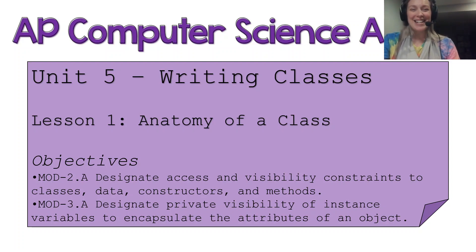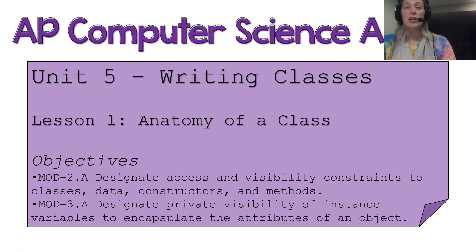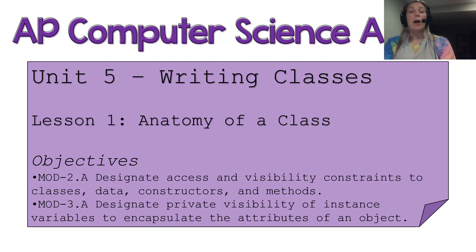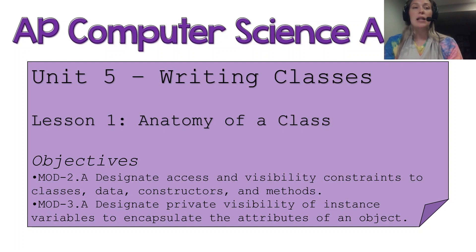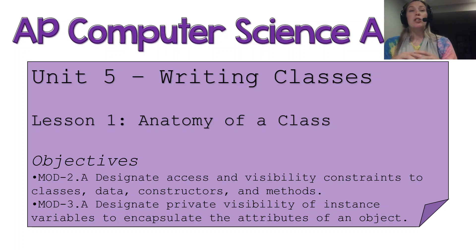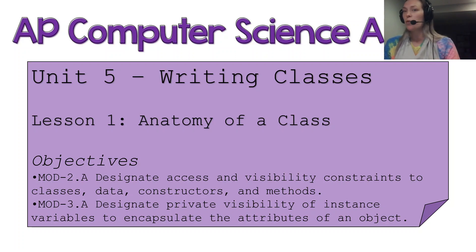So let's take a look at today's objectives. We are going to talk about access and visibility constraints with how we write a class. I'm basically going to be talking about encapsulation and leading into that — why we have private visibility for our instance variables. A lot of what we go through in today's lesson we have already gone over in Unit 2, so this lesson is going to be a great review, and then we're going to learn about some more things we can put into classes to help us make those objects.